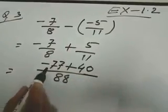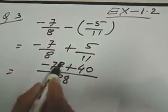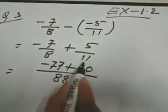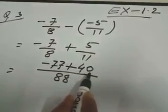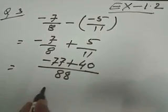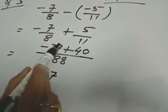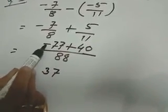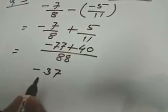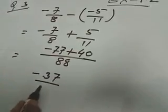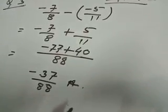Then one is minus 77, another is plus 40. Wait — both terms: minus 77 and minus 40. From the greater number we subtract the smaller: 77 minus 40 gives 37. But since the greater number contains the negative sign, we will put the negative sign. And the denominator will be 88. And this is your answer.